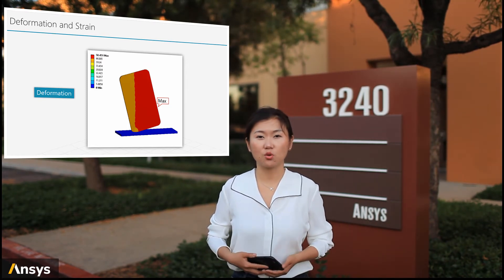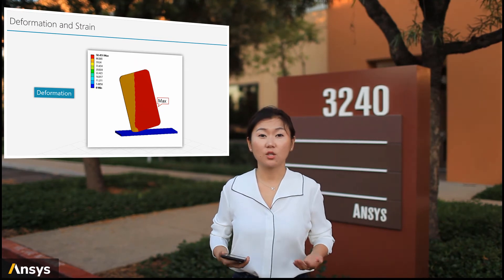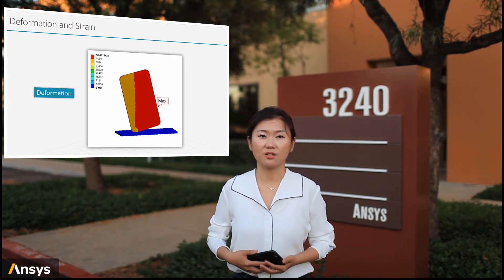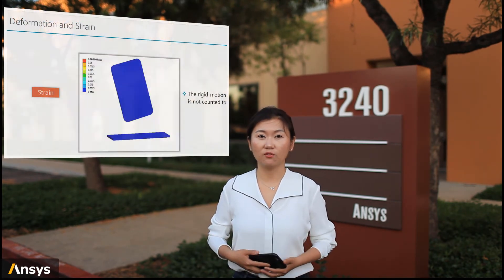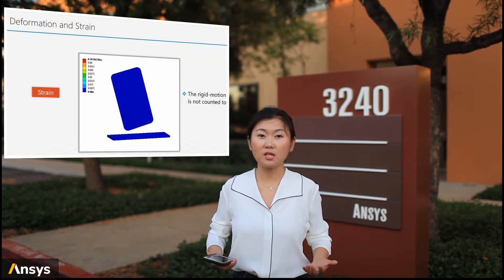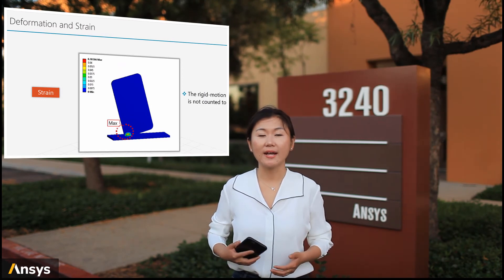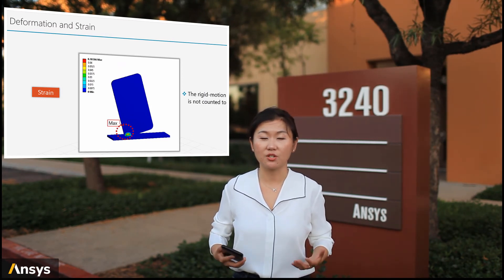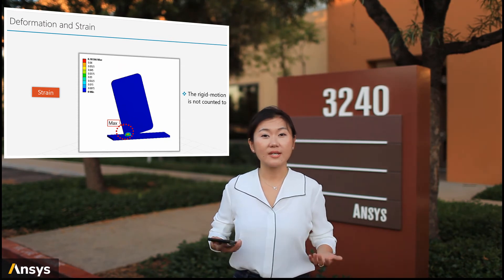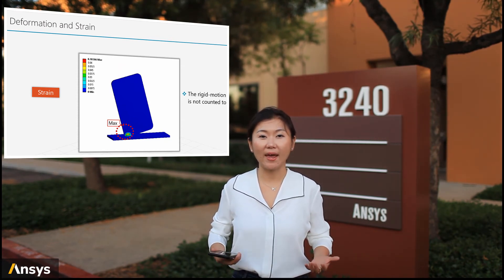This is because deformation contains both rigid body motion and distortion of the object, which in many cases could not reflect the material's condition. On the other side, let's plot the strain result. We can see that most of the strain value is concentrated on the left corner, and the maximum value locates at the contact region with the ground. For the rest of the body, the strain value is almost zero everywhere.